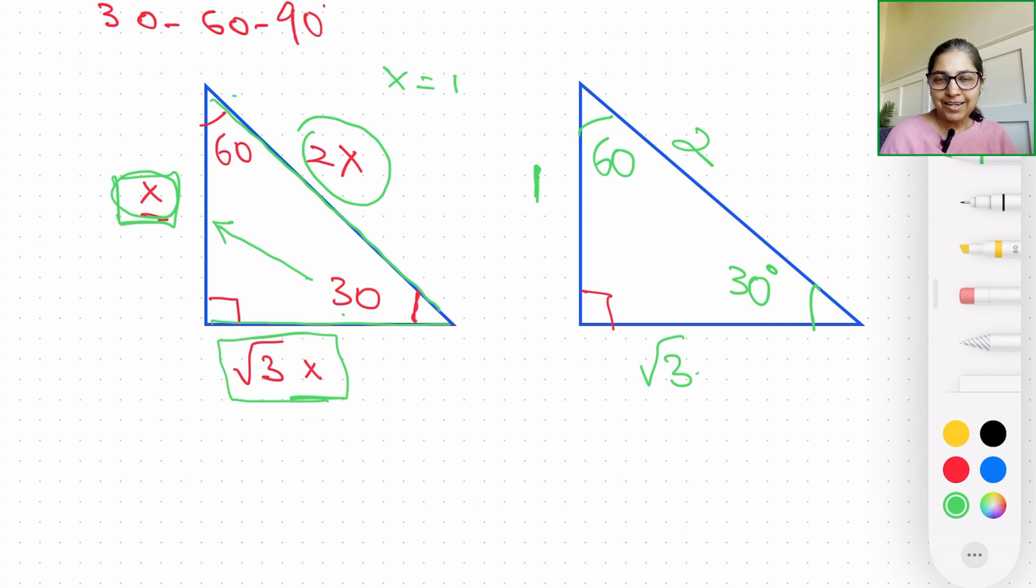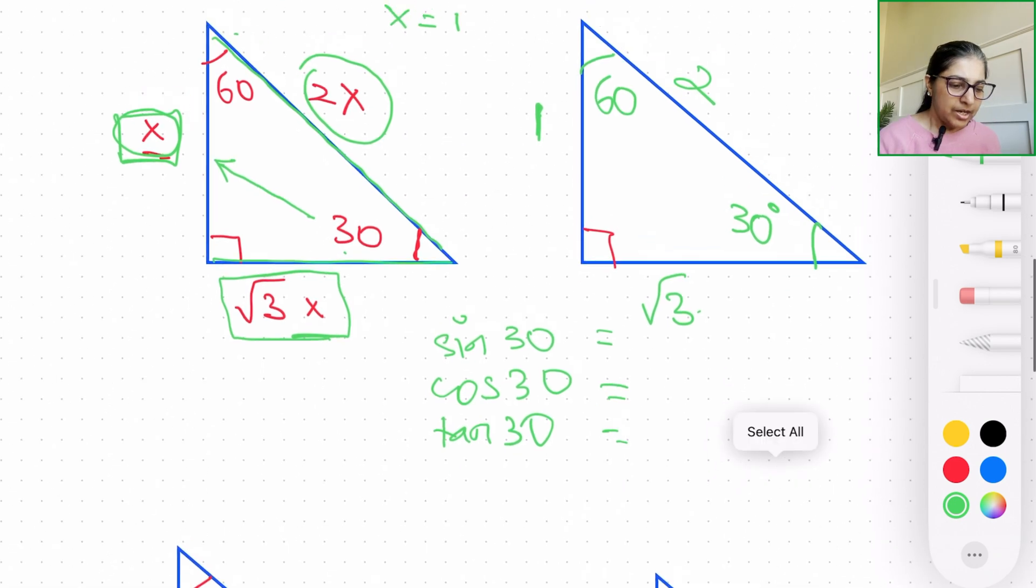And again, with respect to the angle here, we can come up with sin(30°), cos(30°), and tan(30°), and the other three trigonometric ratios whatsoever, just by utilizing this particular angle.